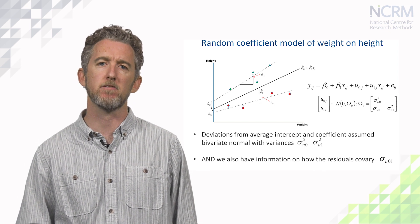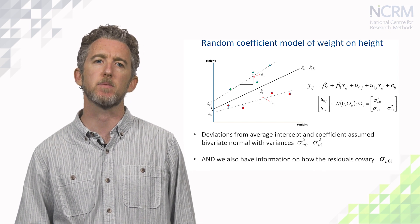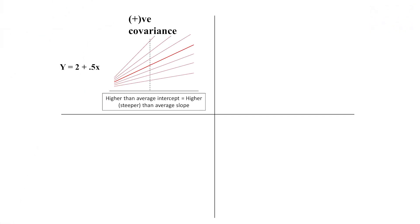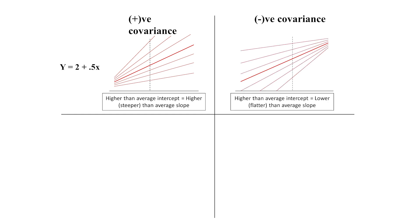The interpretation of this covariance term requires care and is dependent on the relationship between y and x. For example, when the relationship between y and x is positive, a positive covariance means that when the intercept residual is positive — and hence the intercept is higher than average — there will also be a positive coefficient residual, meaning a stronger than average coefficient, because you are adding a positive residual to the positive slope. A negative covariance term means that a higher than average intercept is associated with a weaker than average coefficient, because you are adding a negative residual to the positive slope.